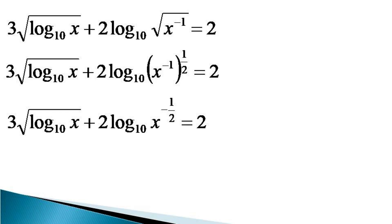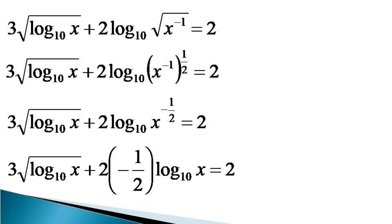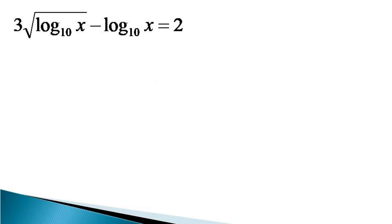Now we use the power law of logarithm to get the equation as 3 into root of log x to the base 10, plus 2 into minus half log of x to the base 10, is equal to 2. On simplification, the equation becomes 3 into root of log x to the base 10, minus log of x to the base 10, is equal to 2.